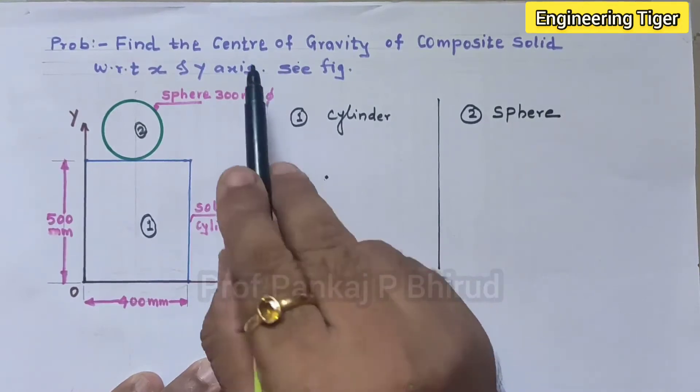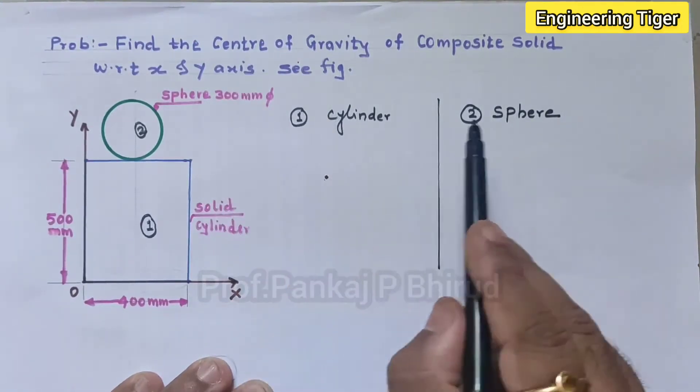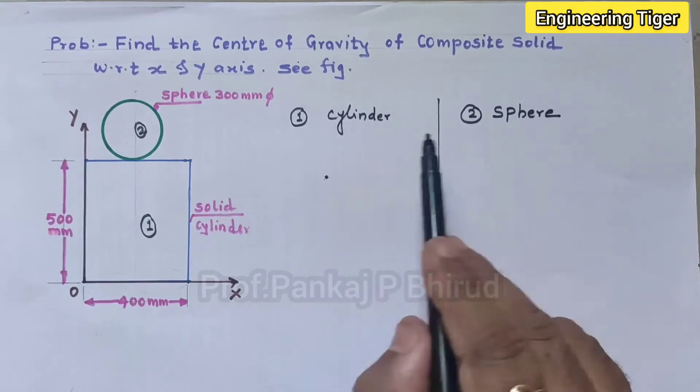Now first of all we will calculate volume for both cylinder and sphere. So let us try to calculate V1 and V2.